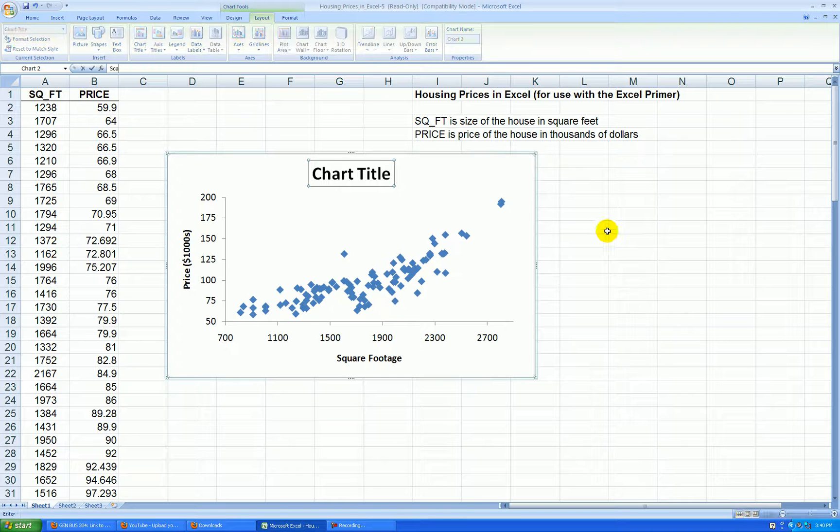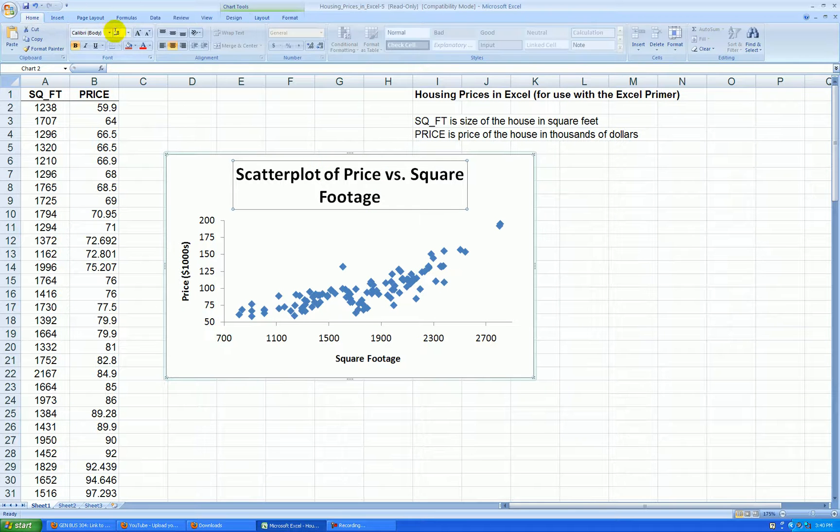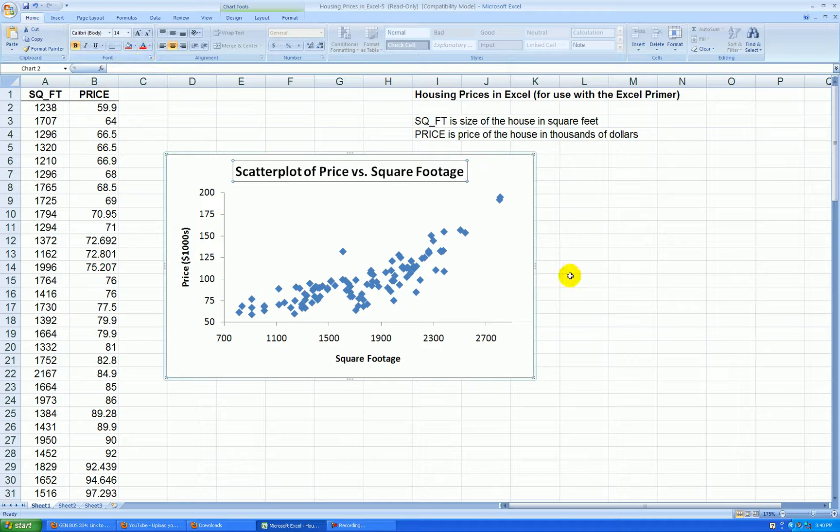Kind of redundant given we know the axis labels here. It's kind of a big title so I'll click on it once. Go to the home tab. Let's change that to size 14. OK.